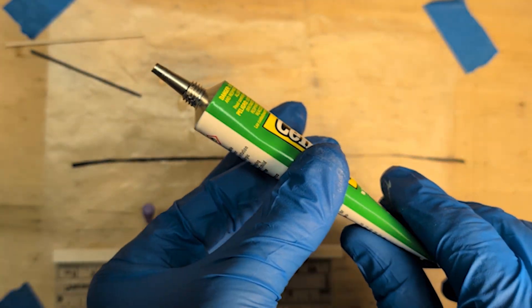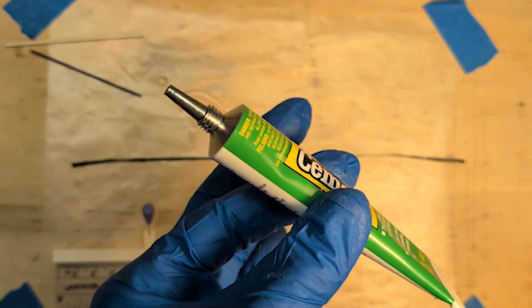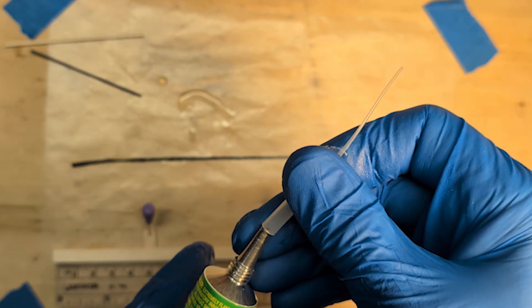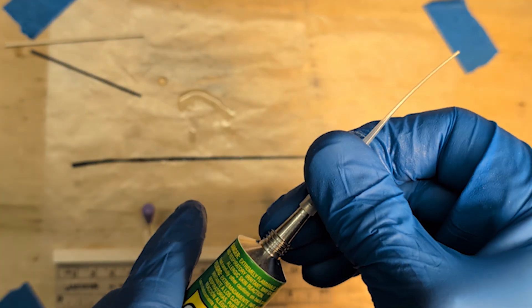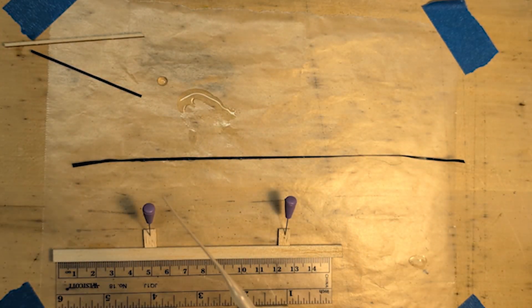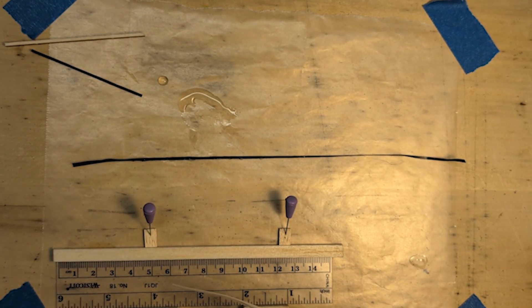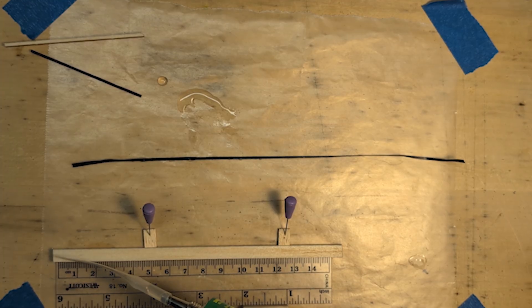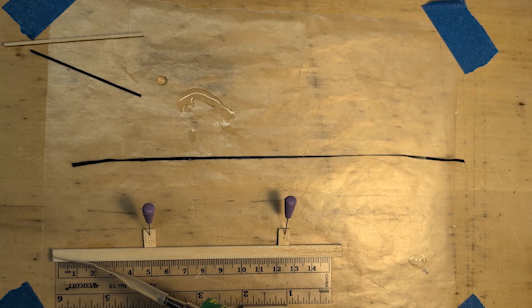But you notice I didn't actually dent the tube when I squeezed it, I just applied pressure. So this is the method for applying the glue to the wood that the kit recommends, is to use the micro glue applicator. So this is called double gluing.